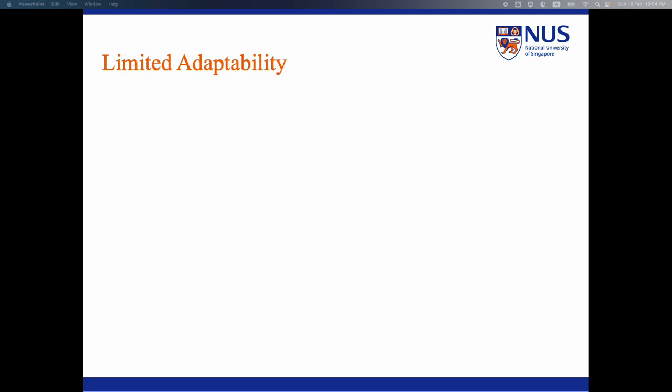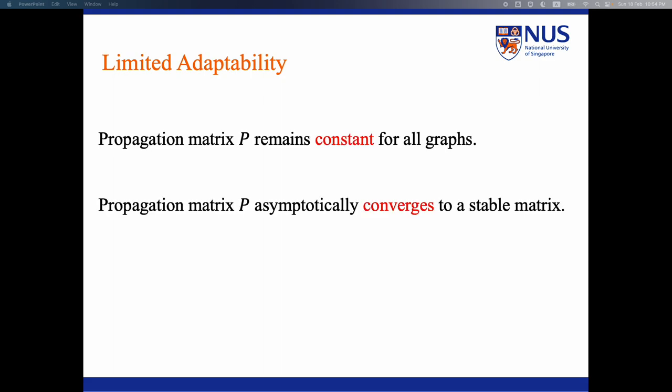However, we observe limited adaptability in existing polynomial matrix P. First, P remains constant for all graphs. Second, P asymptotically converges to a stable matrix.